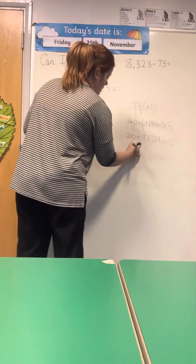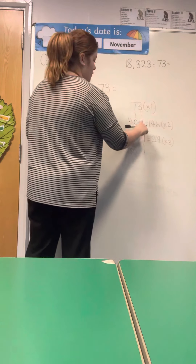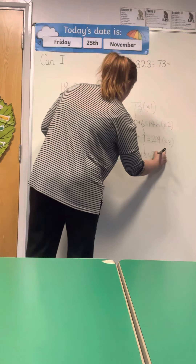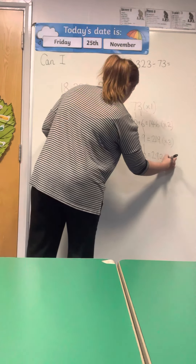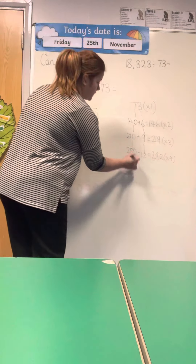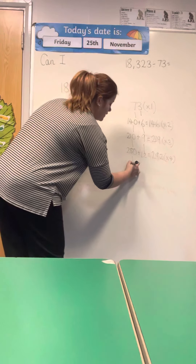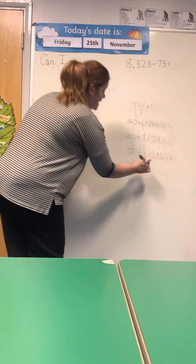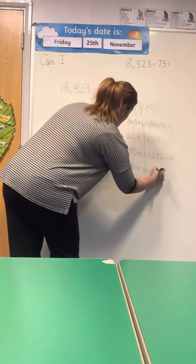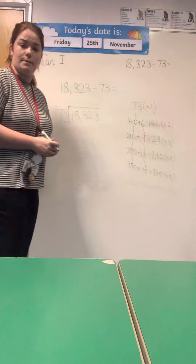Continuing: 7, 14, 21, 28 times 10 is 280, and 3, 6, 9, 12 — add them together: 292 times 4. One more to complete my 5 multiples: 7, 14, 21, 28, 35 times 10 is 350, and 3, 6, 9, 12, 15 — so 365 is 73 times 5.